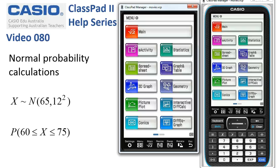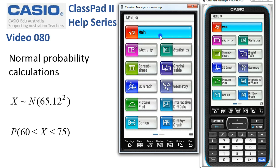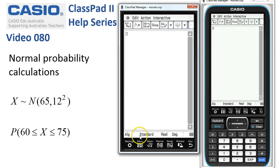Normal probability calculations in main. We'll start in the main application. We're in standard real degree settings down the bottom.